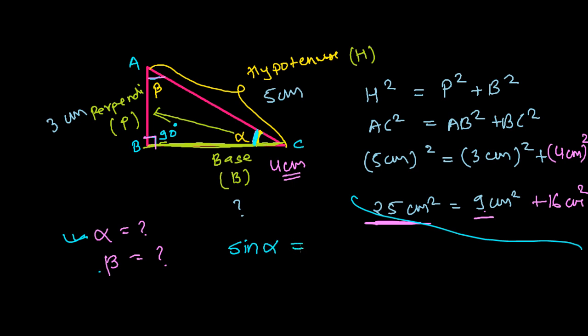What is sine alpha? Sine alpha is always the opposite over the hypotenuse, or perpendicular over the hypotenuse. In this triangle, it will be AB over AC. And then sine alpha equals AB which is 3 cm over AC which is 5 cm, so it's 3 over 5.